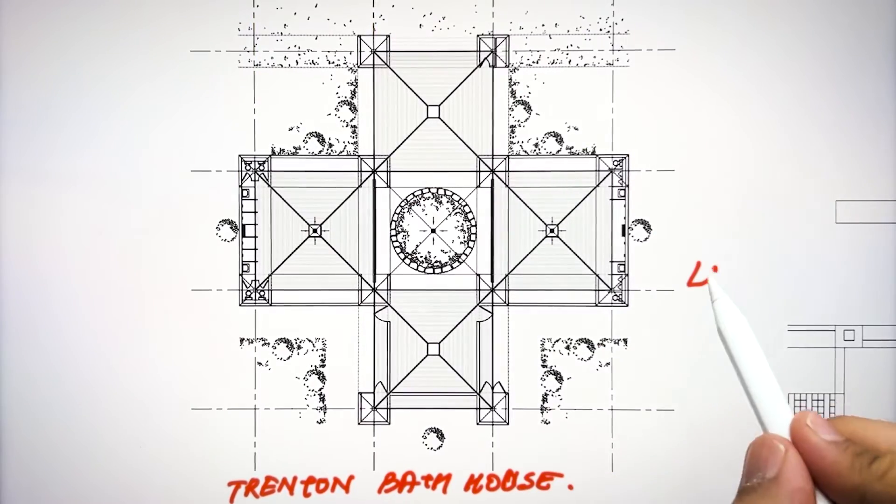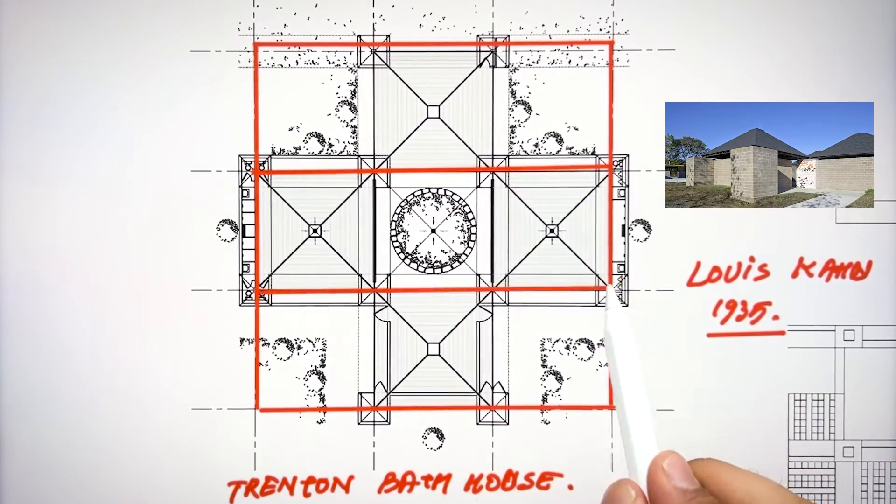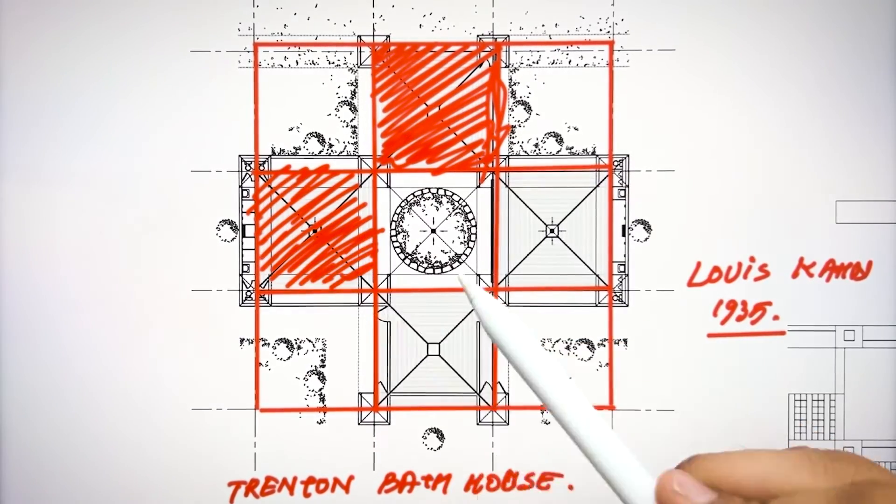The Trenton Bath House by Louis Kahn also follows the concept of nine grid where he placed the four spaces by following the same concept of nine grid.